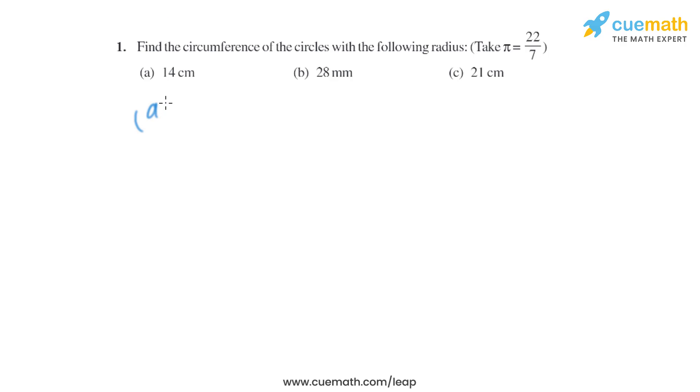Let's start with the first part. The radius given in the first part is 14 centimeter. Now we know how to find the circumference of a circle. The formula to find the circumference of a circle is 2πr, where r is the radius of the circle and π is 22/7.